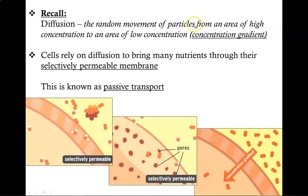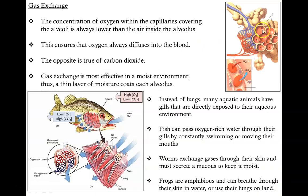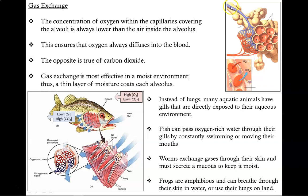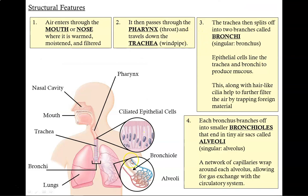Diffusion is the random movement of particles from an area of high concentration to an area of low concentration — we call this a concentration gradient. It's important to have the concentration of oxygen inside these air sacs, these alveoli, always be higher than the concentration of oxygen inside the blood vessels, so that oxygen will naturally diffuse from the air sacs into the bloodstream. Meanwhile, the opposite is true for carbon dioxide — CO2 must always be in higher concentration inside the bloodstream than in the air sacs in order for it to diffuse out, so we can breathe it out of the alveoli, then up the bronchioles, up the trachea, and then out the mouth and nose.